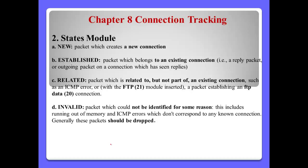Number 2: State module. There are four kinds of states in connection tracking: New, Established, Related, and Invalid. 'New' means it is a kind of packet which creates a new connection. If we use the state 'New', IP tables will always inspect only the new connections.